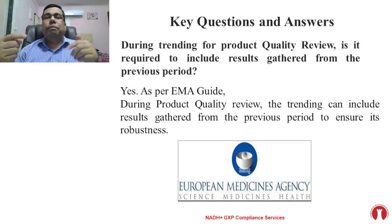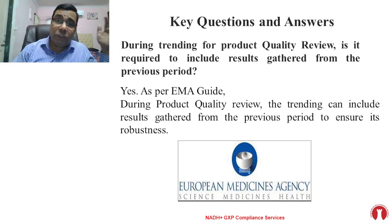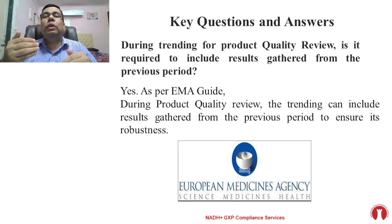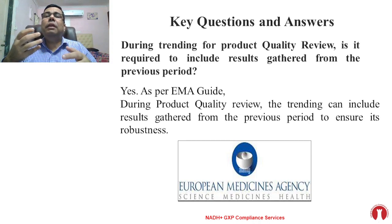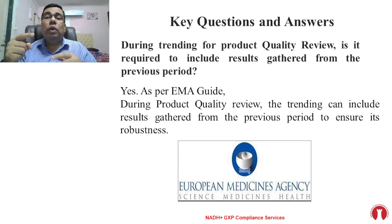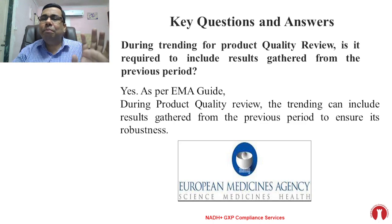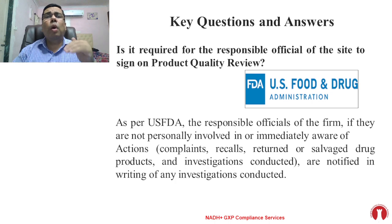The key point is: how will you know whether the process is robust unless you consider previous batches data and previous year data? This is what EMA expects — to ensure robustness of the product. Irrespective of the number of batches you manufacture, you need to consider previous period data while trending the PQR. This is directly in line with the EMA guideline — you can verify the same requirement there.